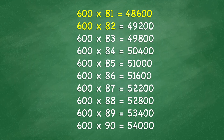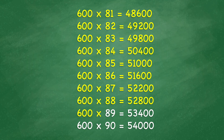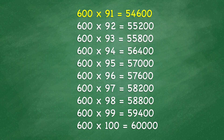600 x 82 equals 49,200. 600 times 83 equals 49,800. 600 times 84 equals 50,400. 600 times 85 equals 51,000. 600 times 86 equals 51,600. 600 times 87 equals 52,200. 600 times 88 equals 52,800. 600 times 89 equals 53,400. 600 times 90 equals 54,000. 600 times 91 equals 54,600. 600 times 92 equals 55,200. 600 times 93 equals 55,800.